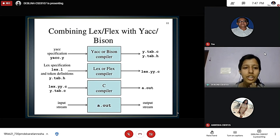Here we have a diagram which demonstrates combining flex with bison. The YAC specification written as yac.by is given to the bison compiler which produces y.tab.c and y.tab.h. The lex specification lex.l and token definitions y.tab.h are given to the flex compiler producing lex.yy.c. Then lex.yy.c and y.tab.c are given to the C compiler which produces a.out. The input stream is provided into a.out and we get the output stream.